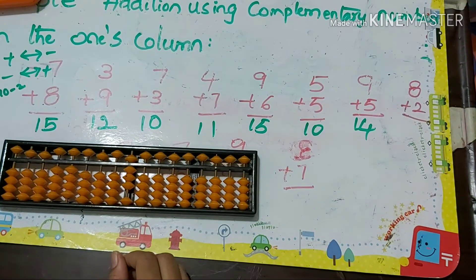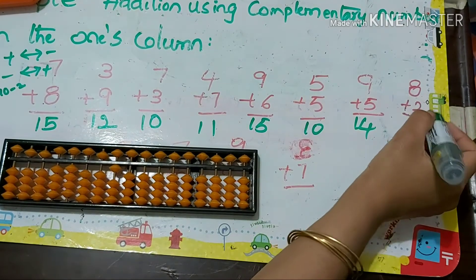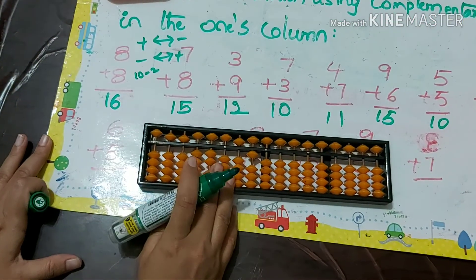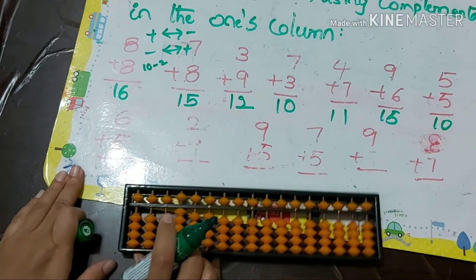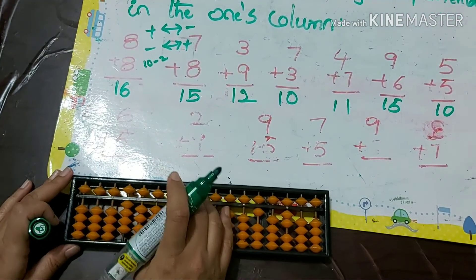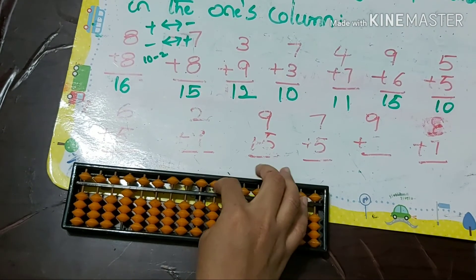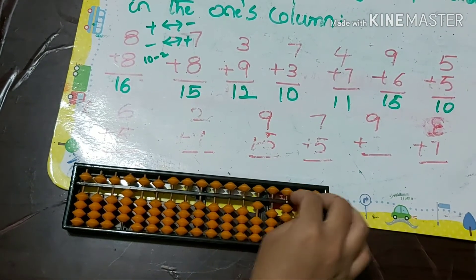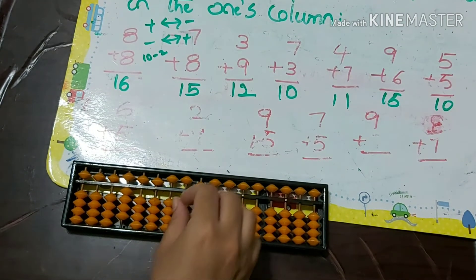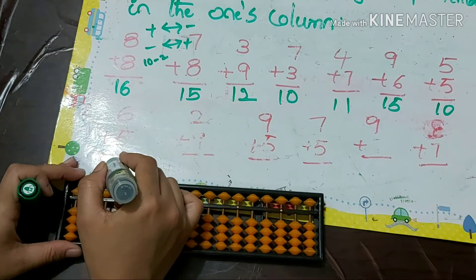Next: 6 plus 8. Using +10 minus 4, the answer is 14. Then 6 plus 5: the answer is 11.